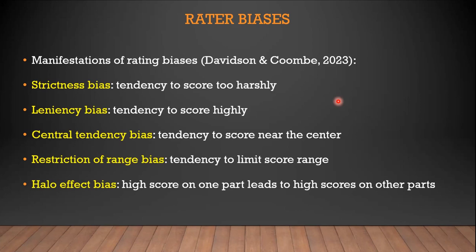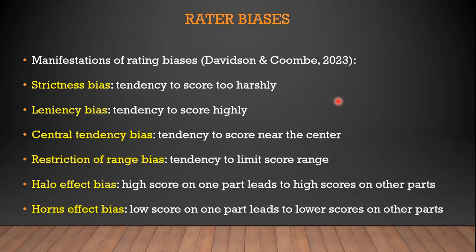The halo effect bias: if a student has a good command of one aspect, such as grammar, you tend to mark them highly on other aspects too, even when those aspects might deserve lower marks. The horns effect bias is the opposite — if a student's grammar is weak, you tend to lower their scores on other aspects as well, even though they might deserve better in those areas.